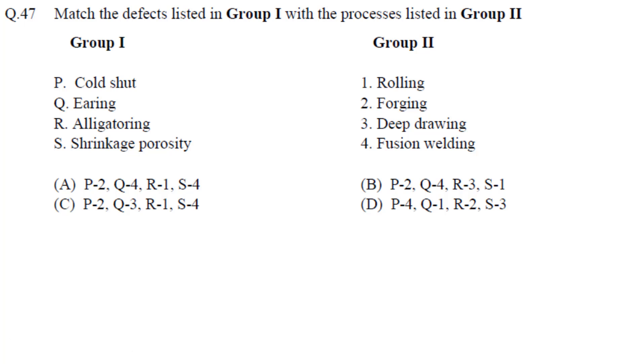Match the defects in Group 1 with the processes in Group 2. Cold shut happens during forging process. Earing happens during deep drawing - formation of ears when you make a cup. Alligatoring happens due to rolling where the structure splits. Shrinkage porosity occurs where melting takes place, like fusion welding. So P matches with 2, Q with 3, R with 1, S with 4. Answer is C.